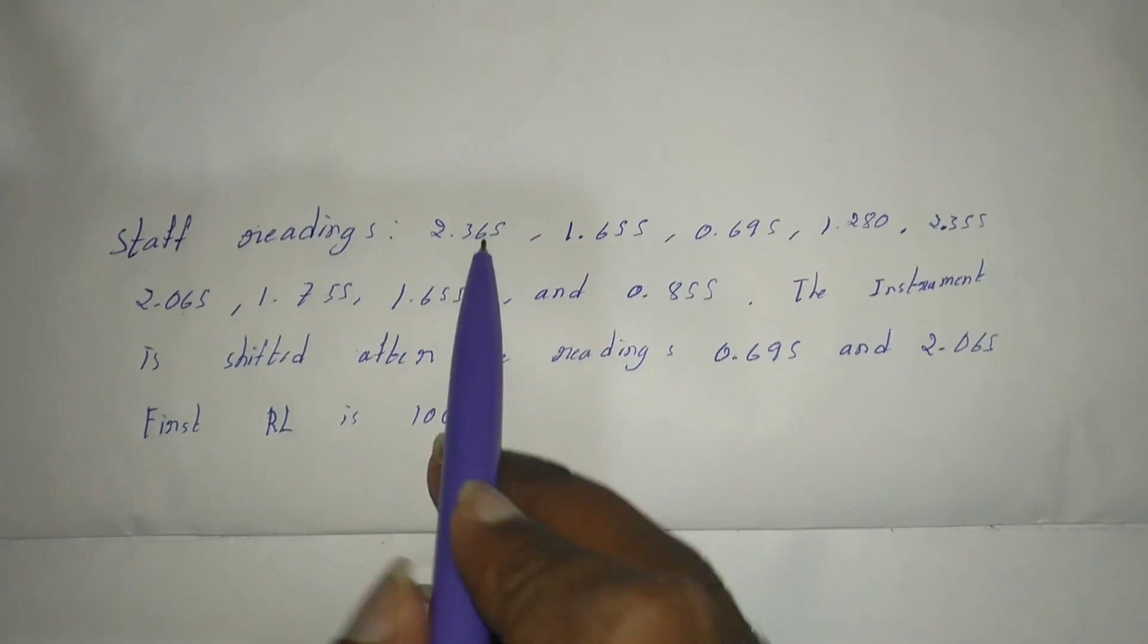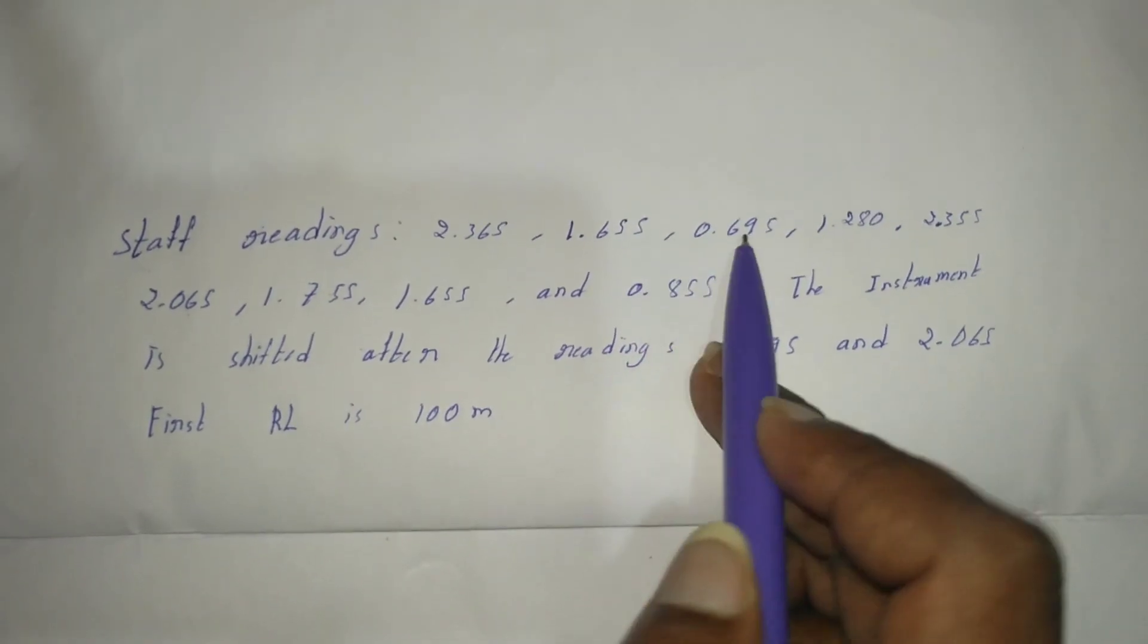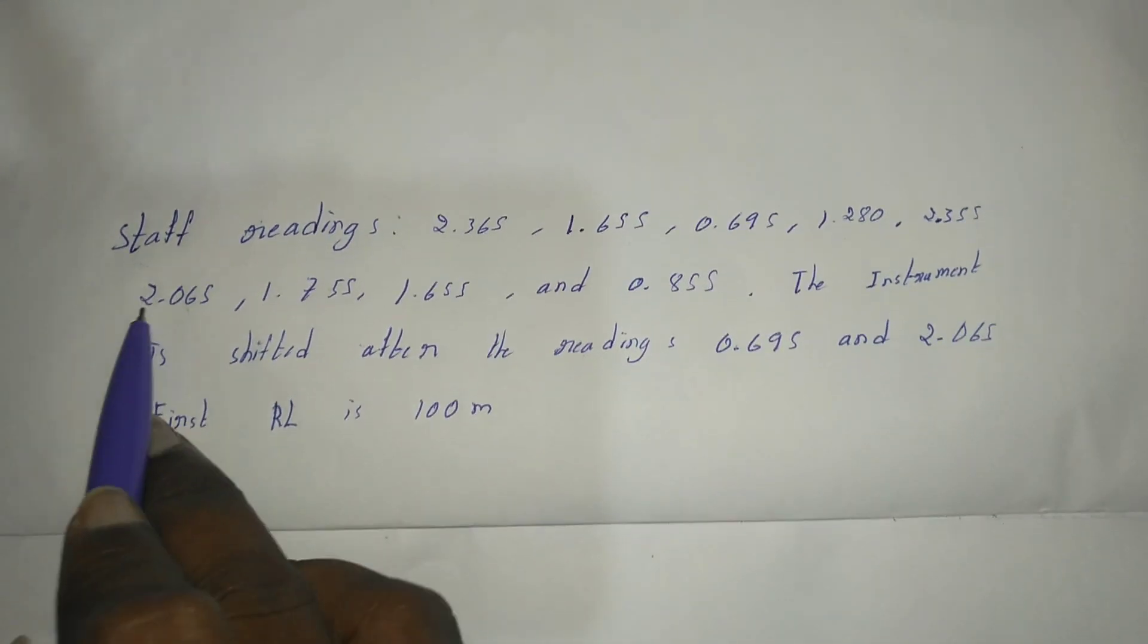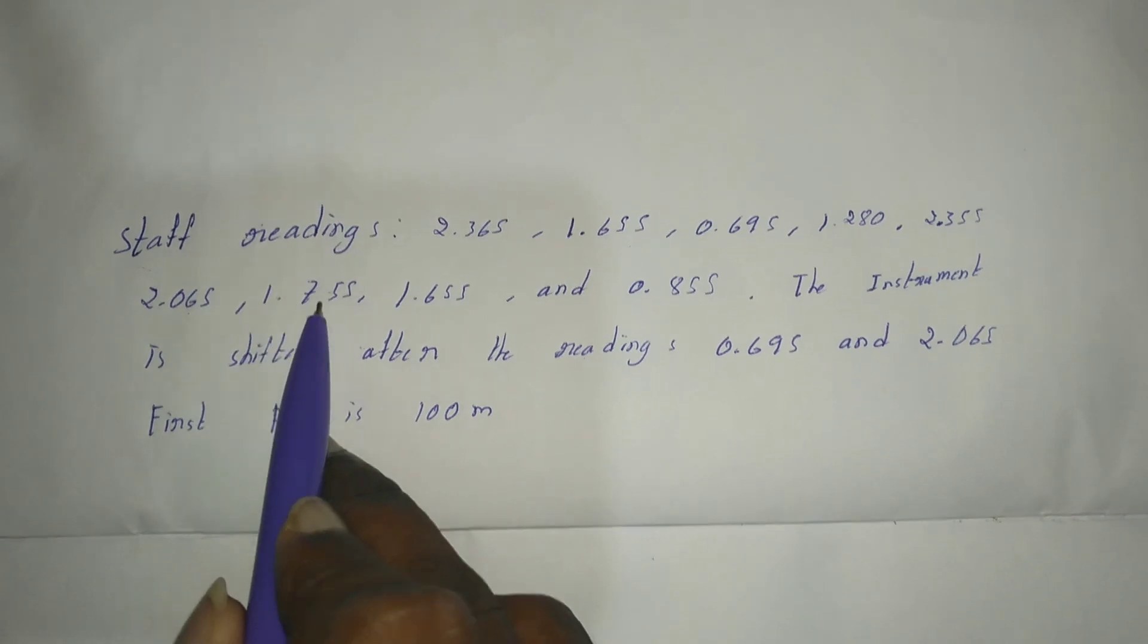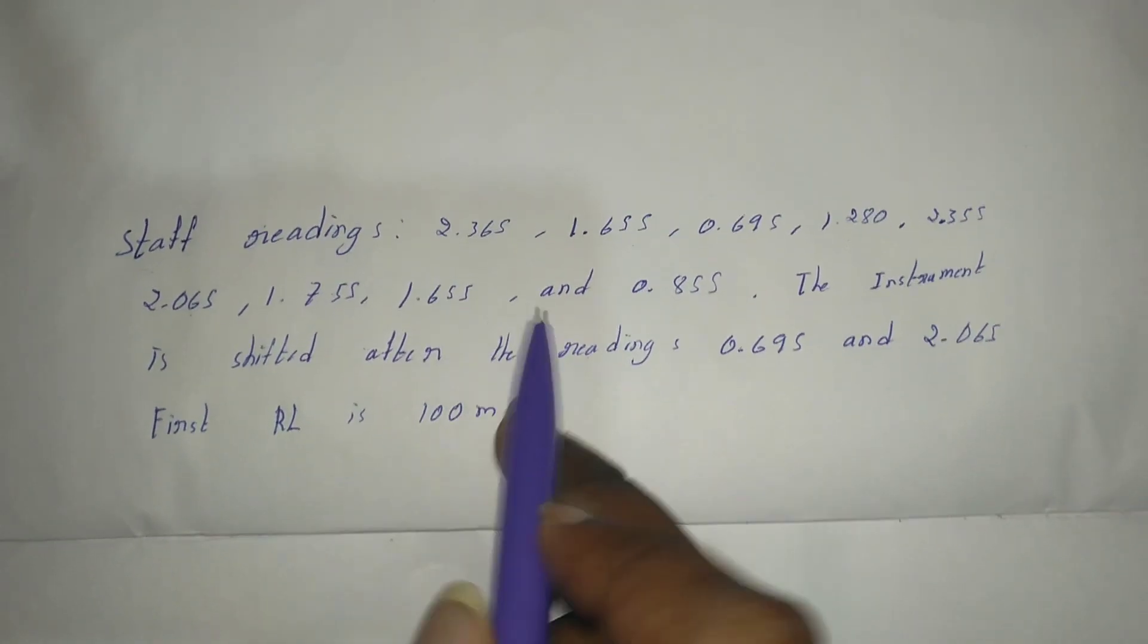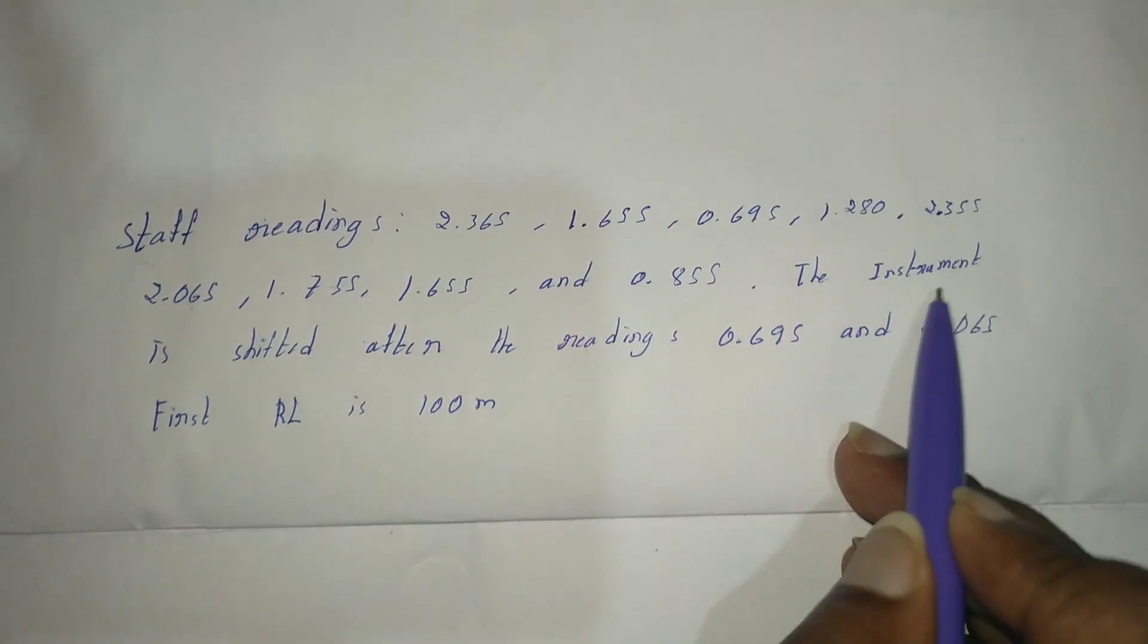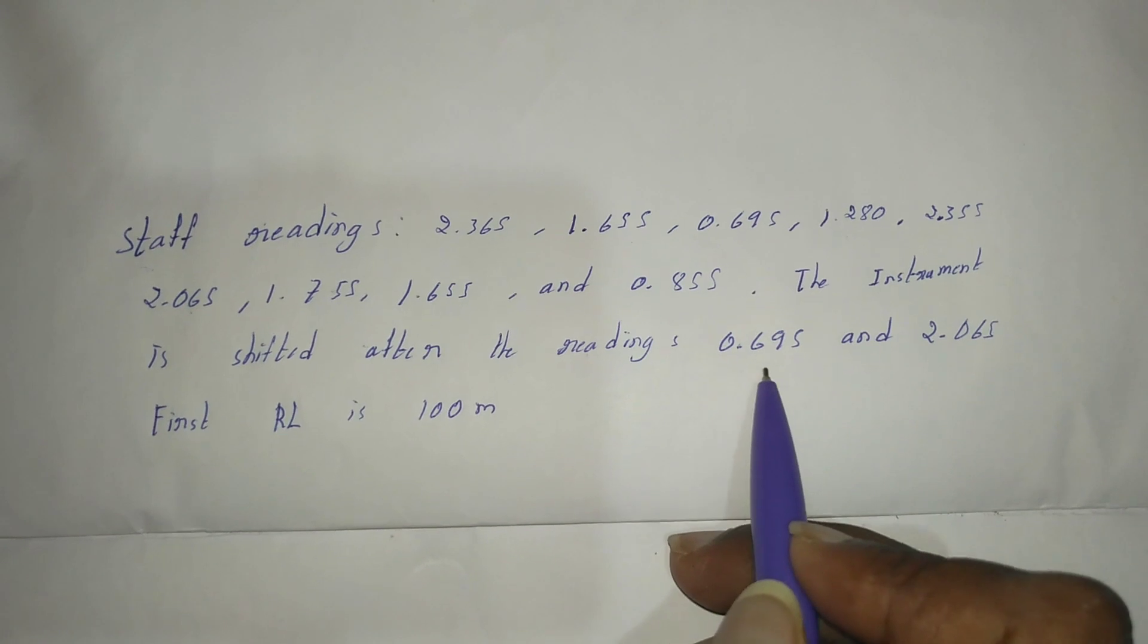The staff readings are: 2.365, 1.655, 0.695, 1.280, 2.355, 2.065, 1.755, 1.655, and 0.555.